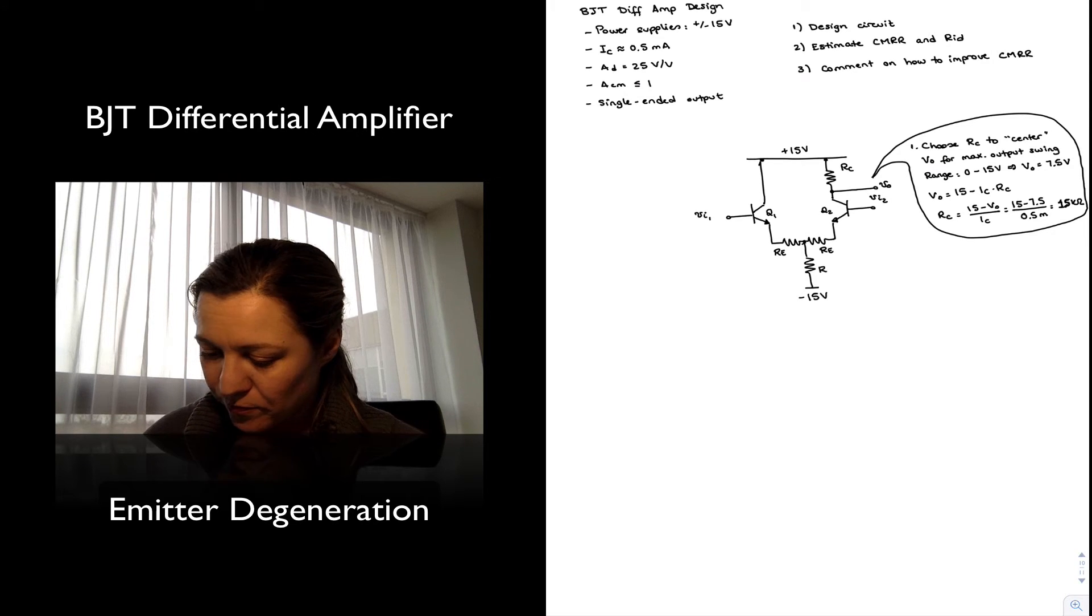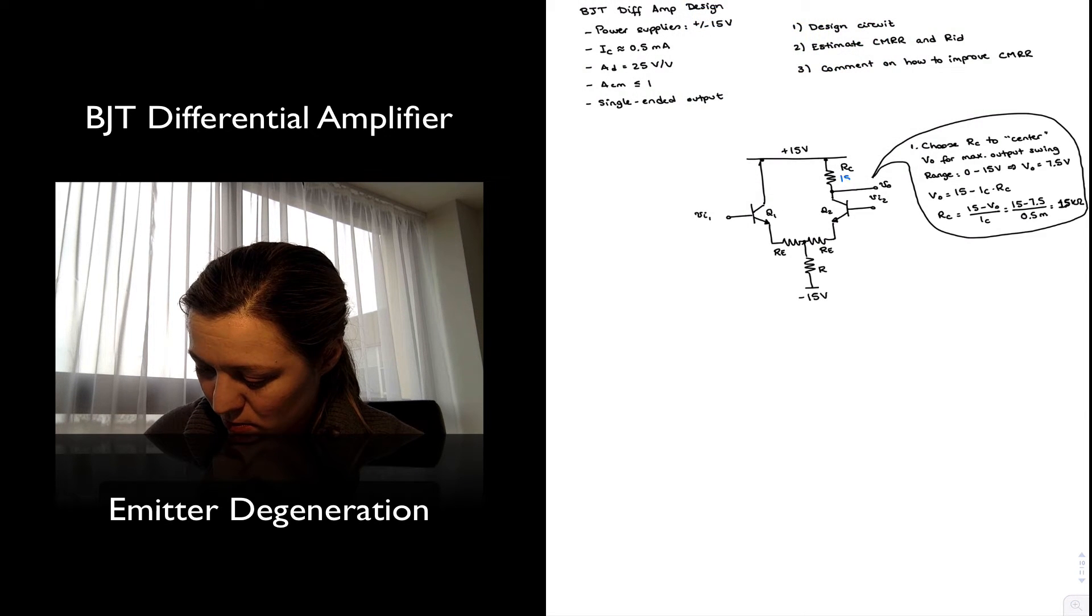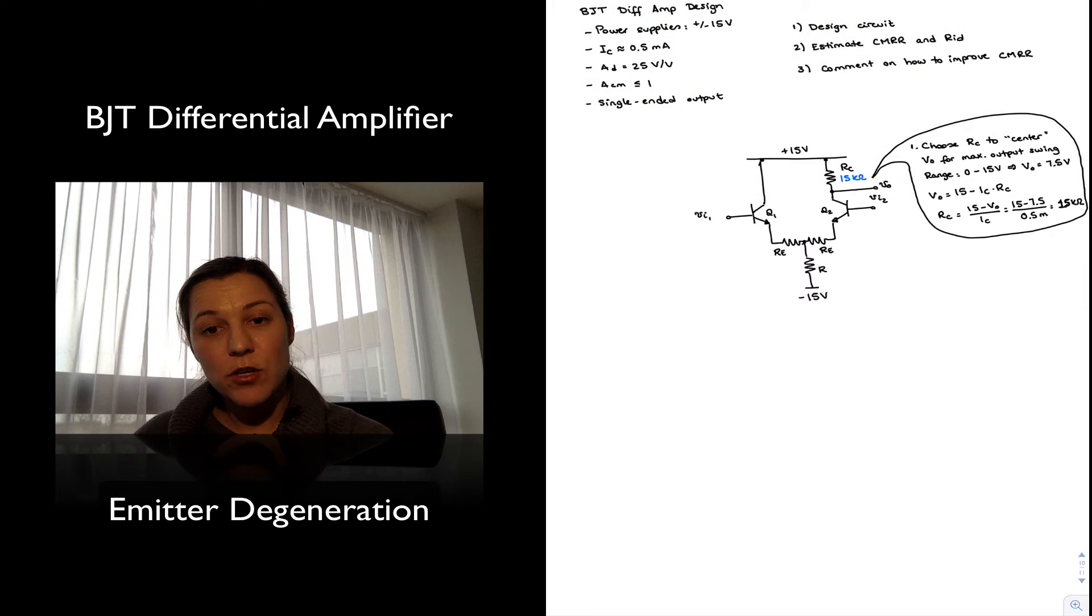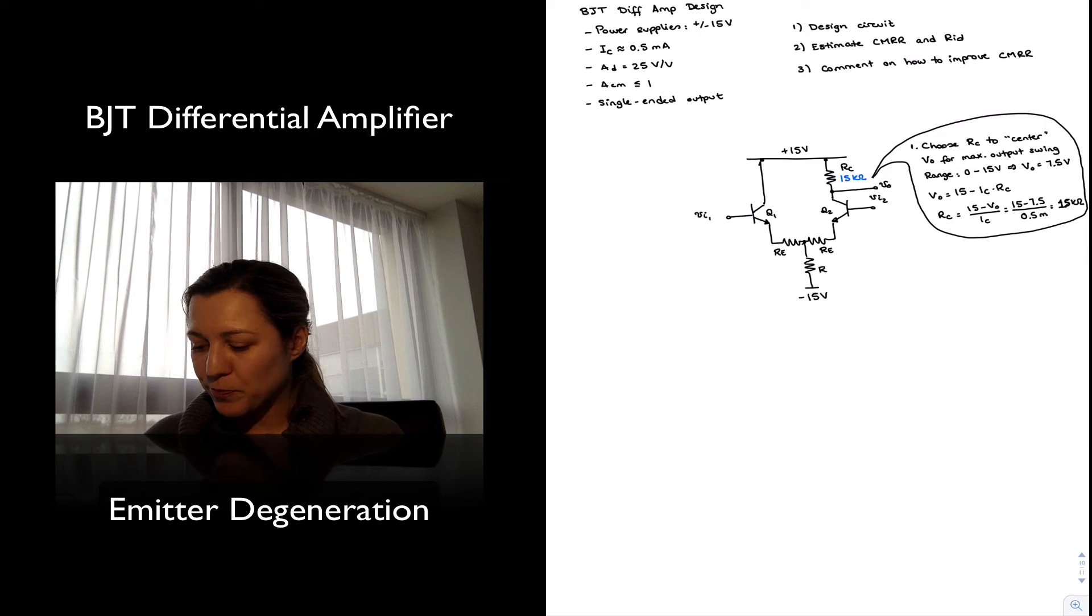So that was our step number one. And that is, again, assuming a collector current for Q2 of half a milliamp, which is what we are giving as a design specification, which we are going to set by setting our tail resistor to the right value. And that's going to be our next step. I'm going to select my tail resistor to make the current through that resistor equal to one milliamp, so that then I will have, in the quiescent point, half a milliamp through each branch. And it is true that as we apply an input signal, the current through each branch is going to vary slightly around that point, but that's going to be the quiescent point. The Q point is the center point where half of the current is steered through each branch of the circuit.